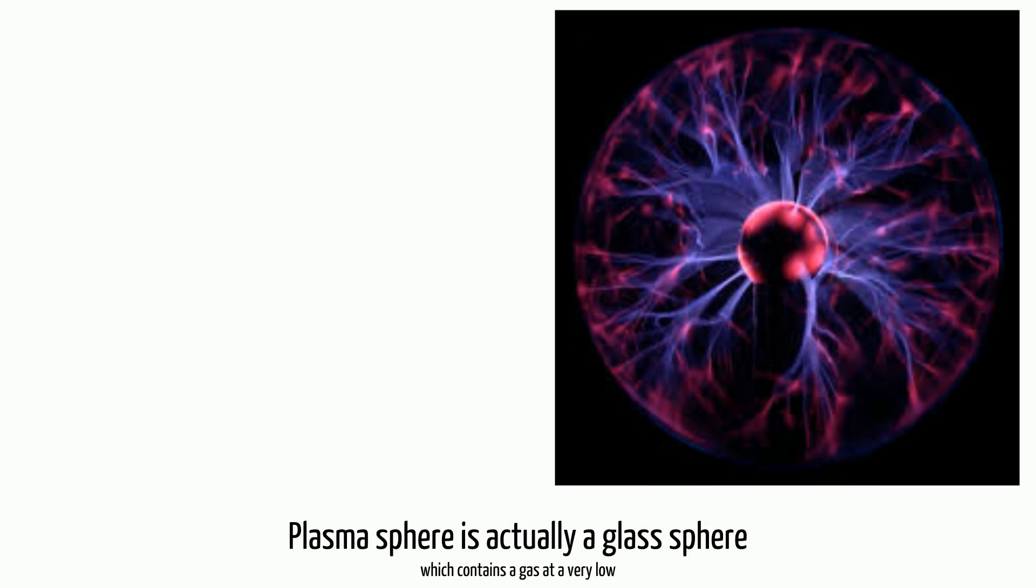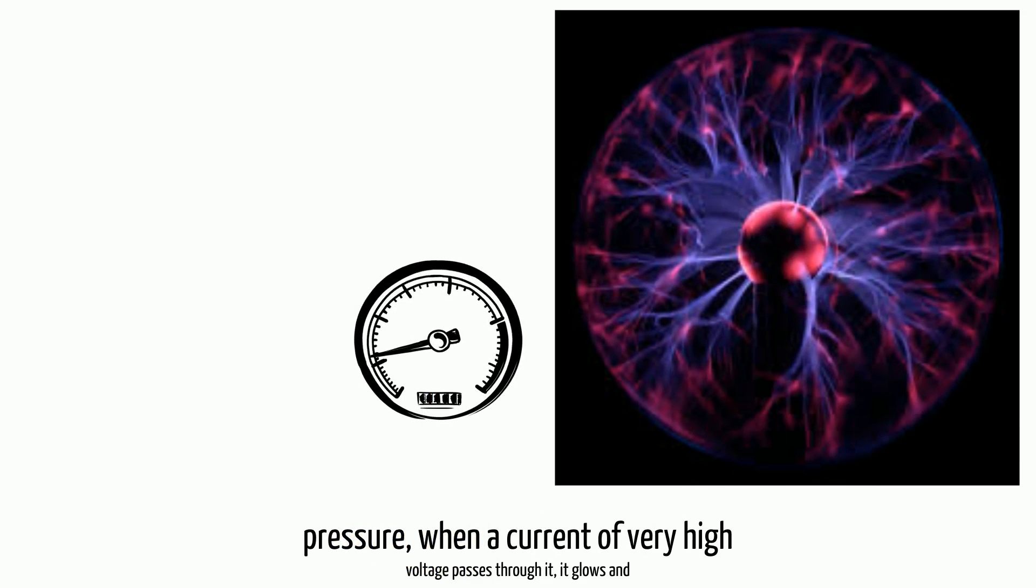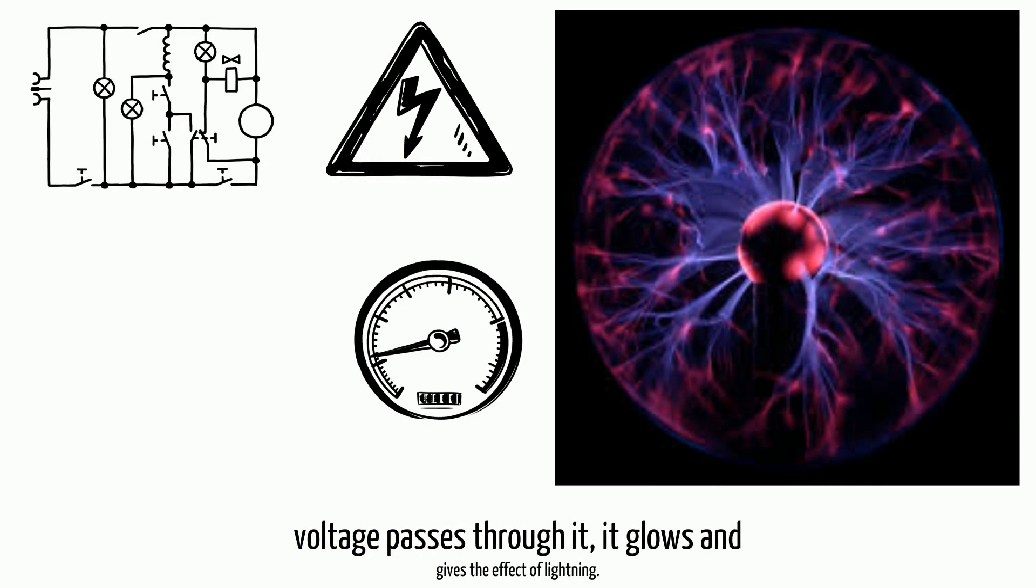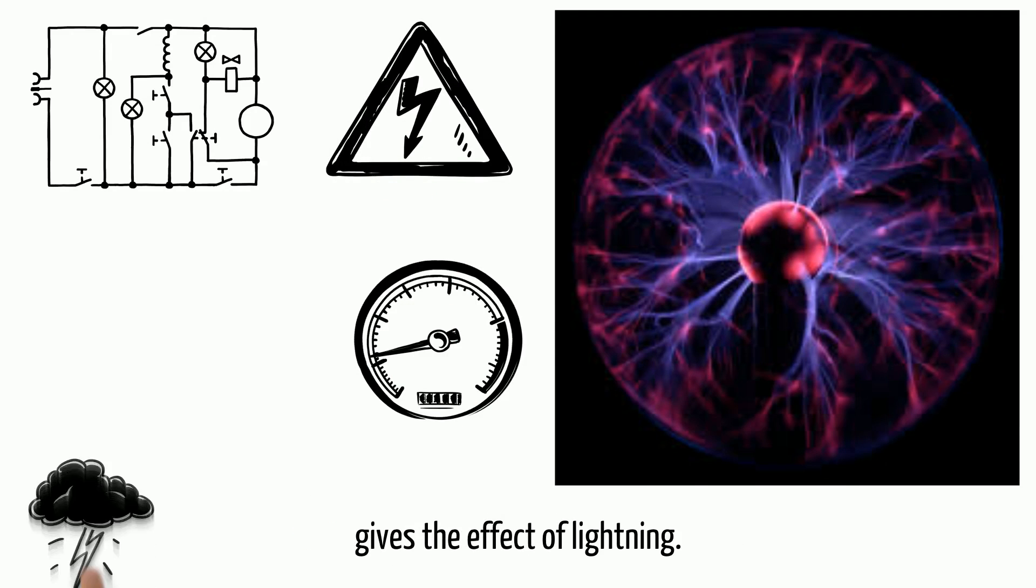A plasma sphere is actually a glass sphere which contains a gas at very low pressure. When a current of very high voltage passes through it, it glows and gives the effect of lightning.